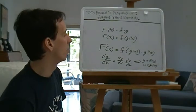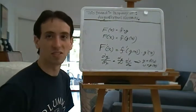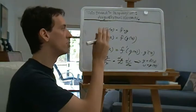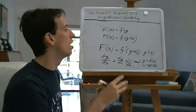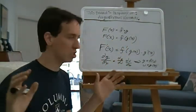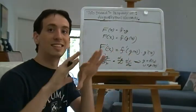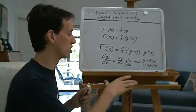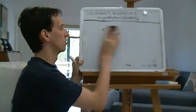That looks a little complicated, but what it's really saying is something very simple: if you need to differentiate a composite function, you take the derivative of the outer function, multiplied by the inner function, and then times the derivative of the inner function. Let's see how this works in practice.